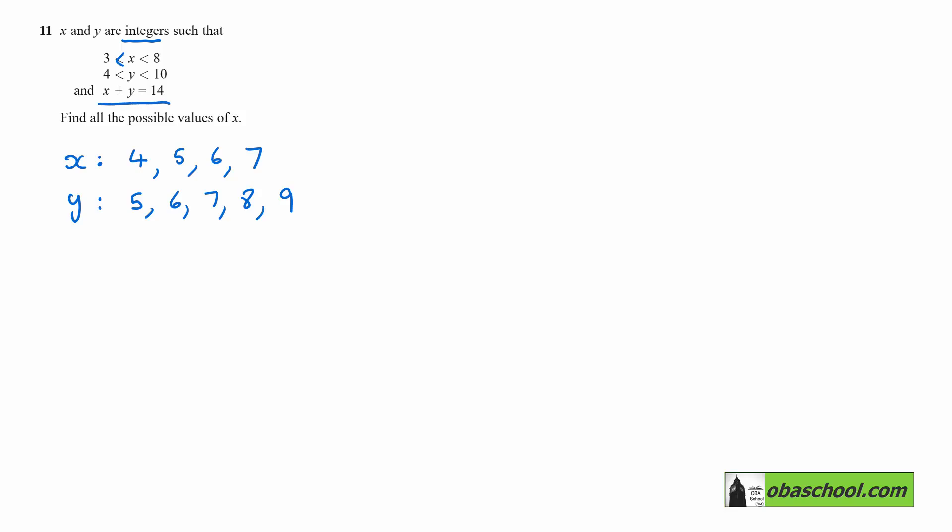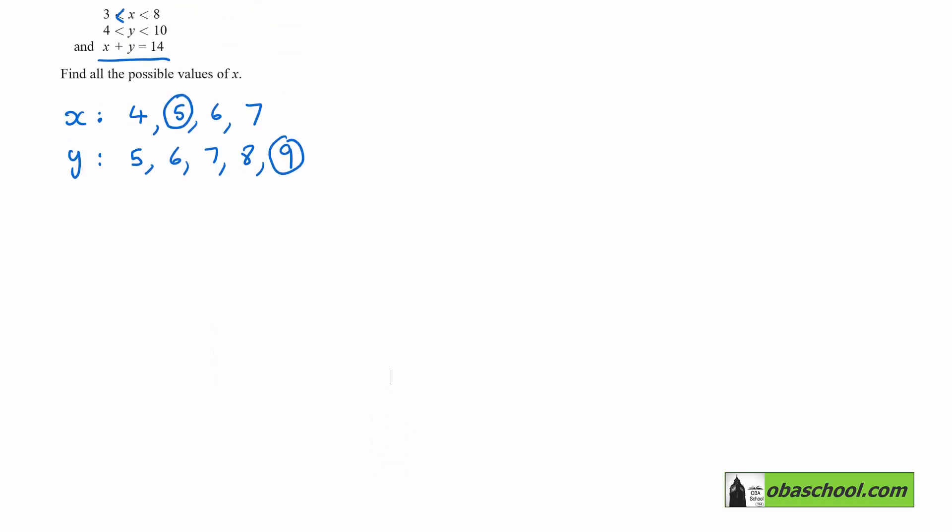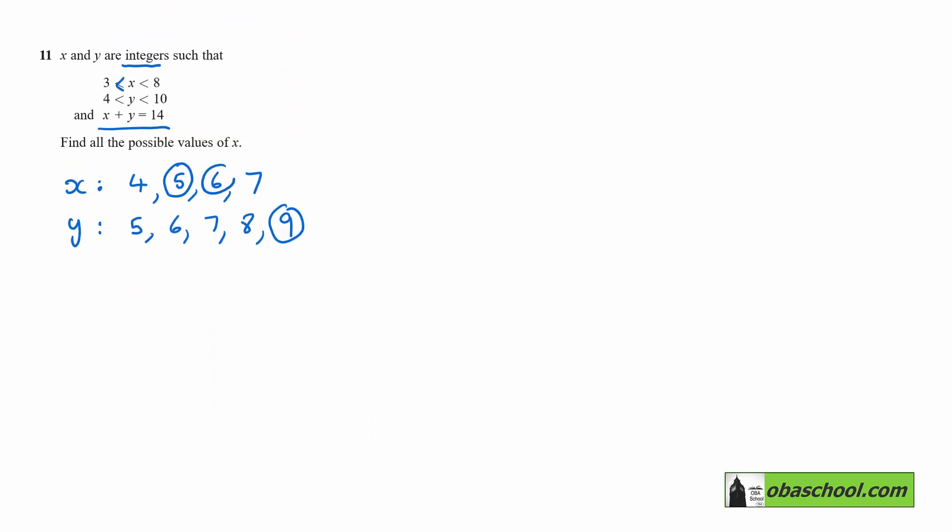We want to find the possible values of x. We could use 5 and 9, that would add to 14. We could use 6 and 8, those would add to 14, and we could use 7 and 7. But there's nothing that we can use the 4 with. So the possible values of x are 5, 6, and 7.